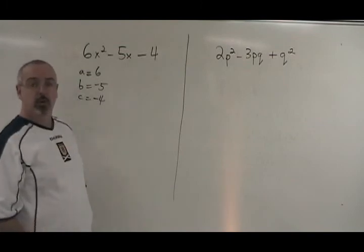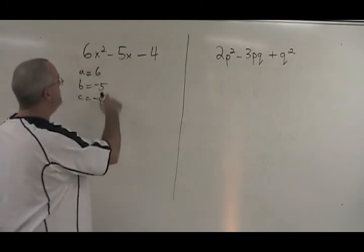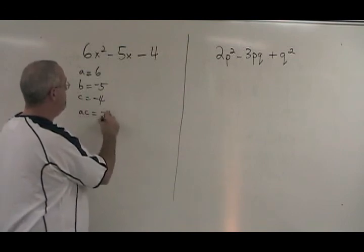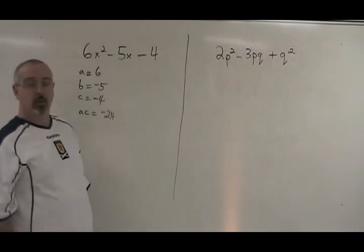But we need a fourth number to work with. We have to multiply a and c together. ac is equal to negative 24, 6 times negative 4 in this case.